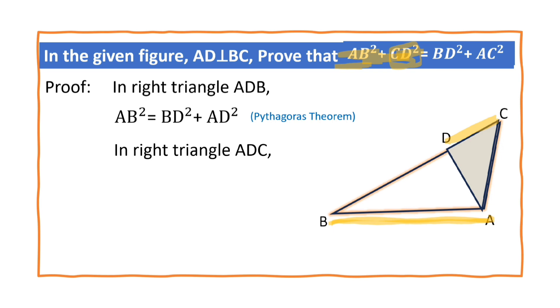we have AC is the hypotenuse. So, AC² = CD² + AD². Why? By Pythagoras theorem. Let this be equation number 1, and this be equation number 2.